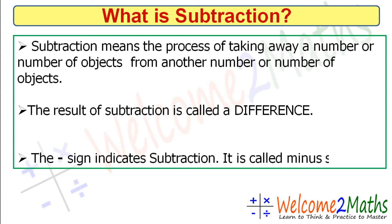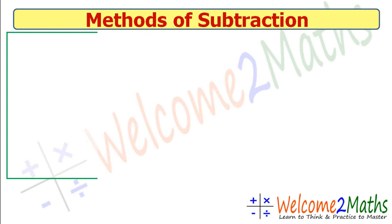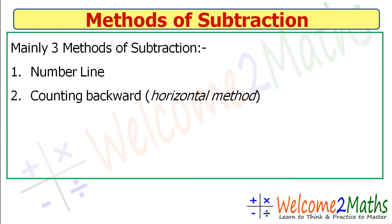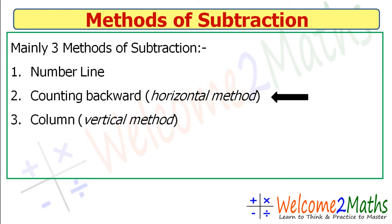This sign indicates subtraction and it's called the minus sign. We mainly use three methods of subtraction: number one is the number line method, number two is the counting backward method or horizontal method, and number three is the column method or vertical method.